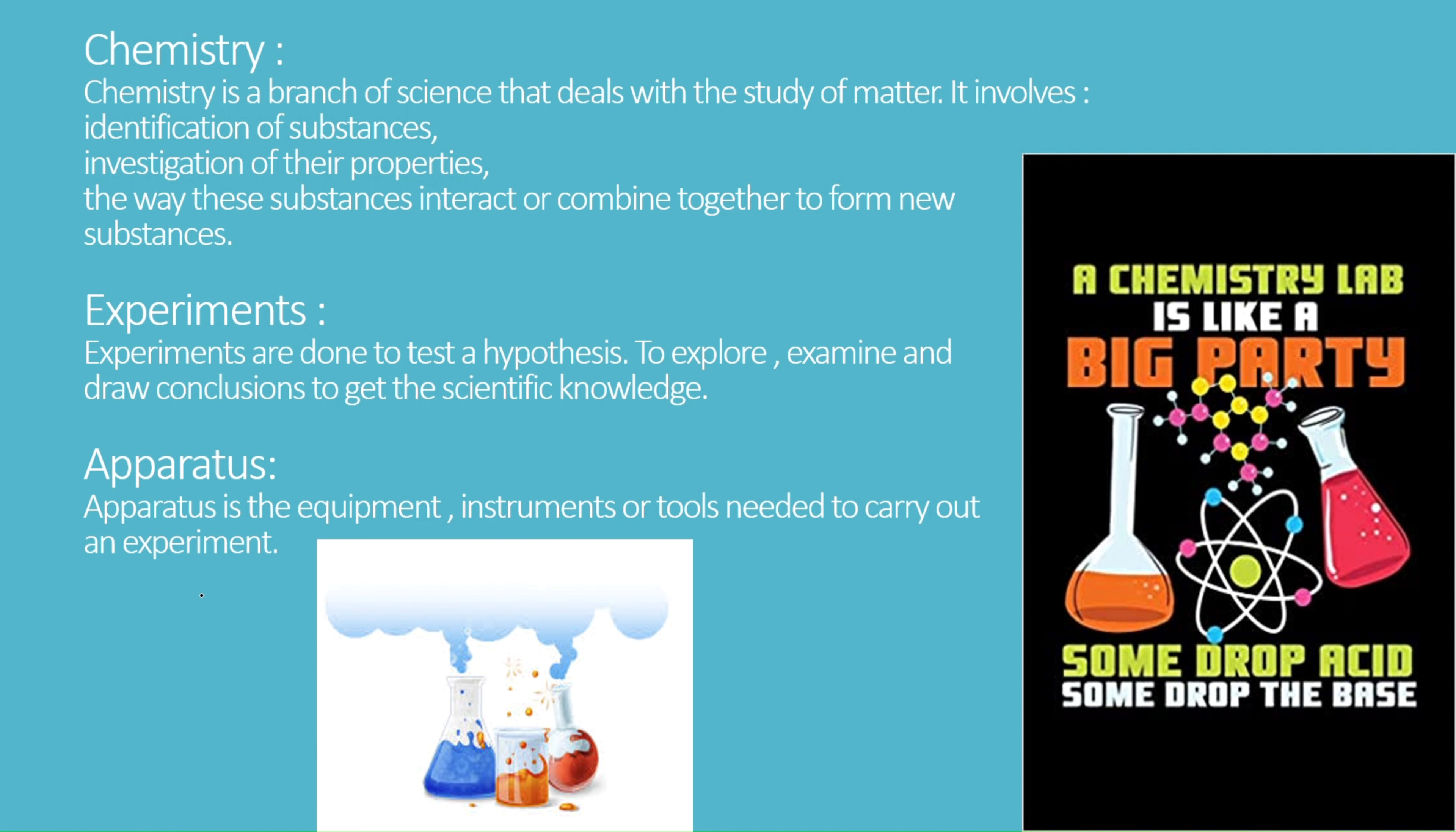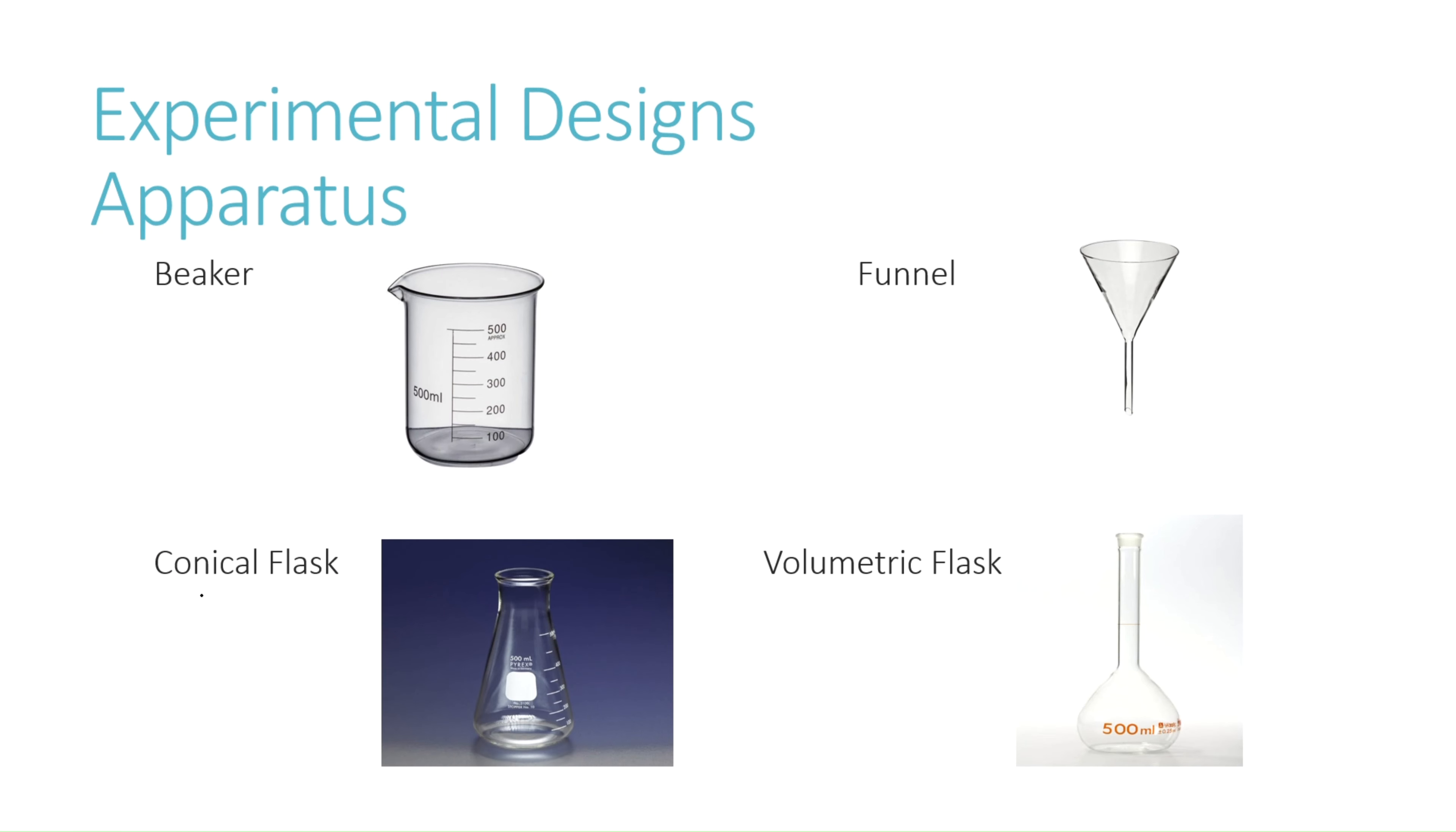For performing experiments we need apparatus. Apparatus is the equipment, instruments, or tools needed to carry out an experiment. Here you can see the apparatus which you can easily find in the chemistry laboratory. The first one is the beaker. Beakers come in different sizes and are used to estimate volume of a given liquid when precision is not needed.